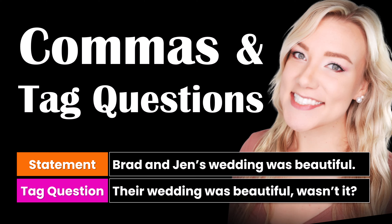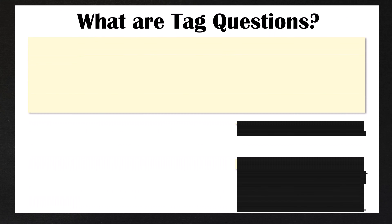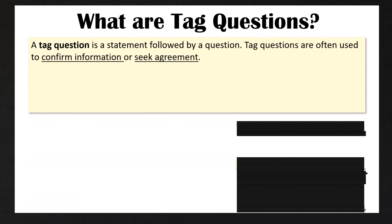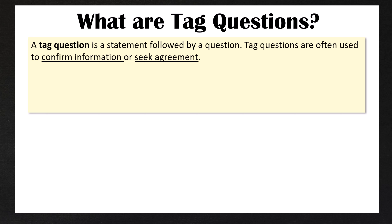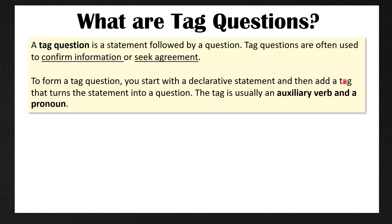Before we get started, make sure to subscribe to Sparkle English for more lessons like this one. So first of all, what are tag questions? A tag question is a statement followed by a question. Tag questions are often used to confirm information or seek agreement. To form a tag question, you start with a declarative statement and then add a tag that turns the statement into a question.